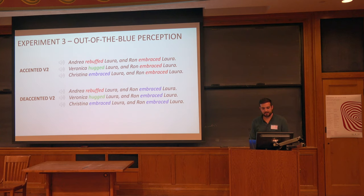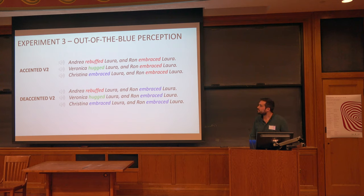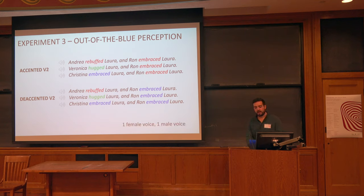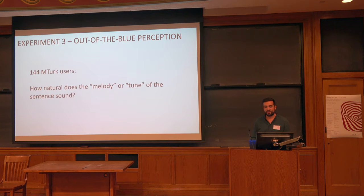We constructed the full set of stimuli with one female and one male speaker and put these on MTurk, asking people to rate how good the tune of the sentence sounded — we wanted them to focus specifically on prosody. We played examples: 'Andrea rebuffed Laura and Ron embraced Laura' — verb two accented; 'Veronica hugged Laura and Ron embraced Laura'; 'Christina embraced Laura and Ron embraced Laura' — with de-accented verb, which should sound weird.